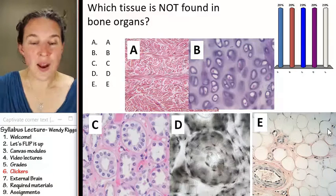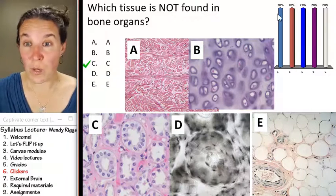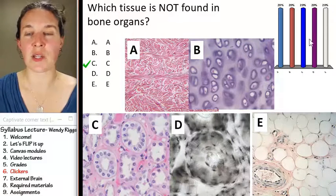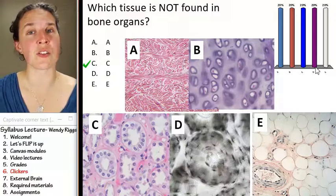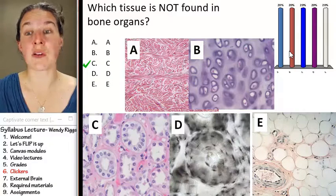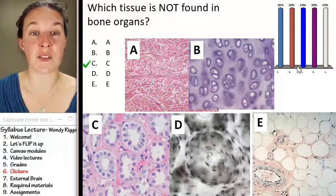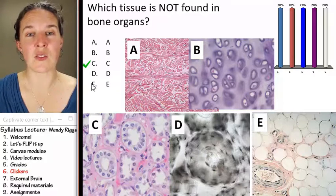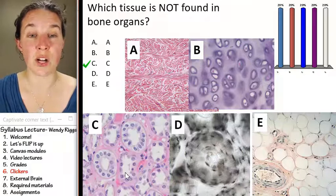Then the correct answer comes up and we see the distribution of responses. If we ended up with something like a split, I'd probably have you fight about it in class — find somebody who voted differently and try to convince them your answer is correct. We would re-poll it and see if we fixed the problem. If we didn't, clearly there is a misconception that must be dealt with, and we figure out what the problem is.